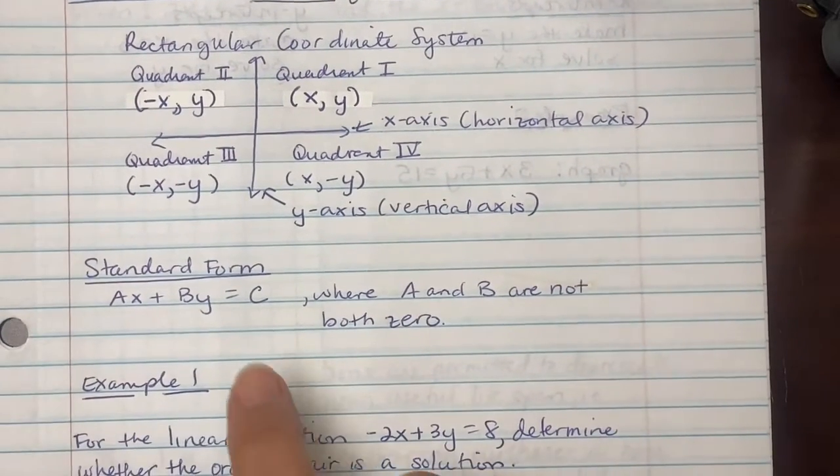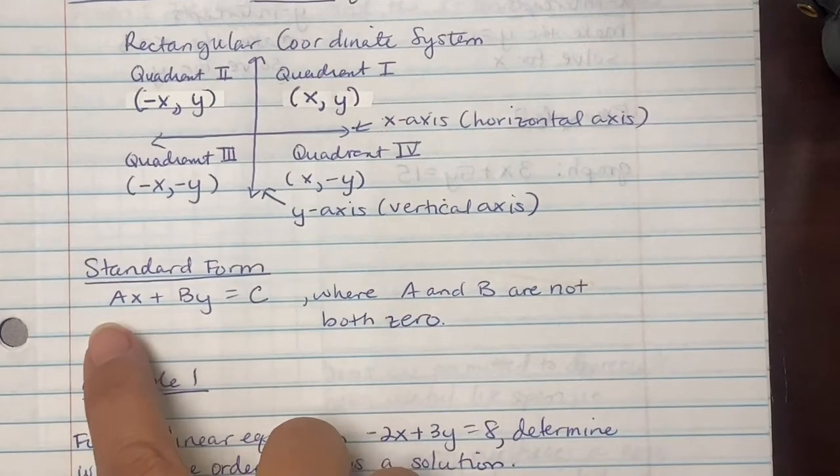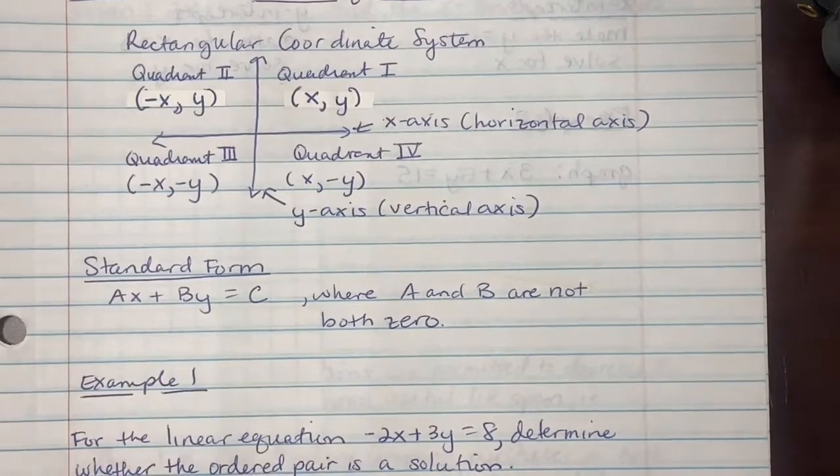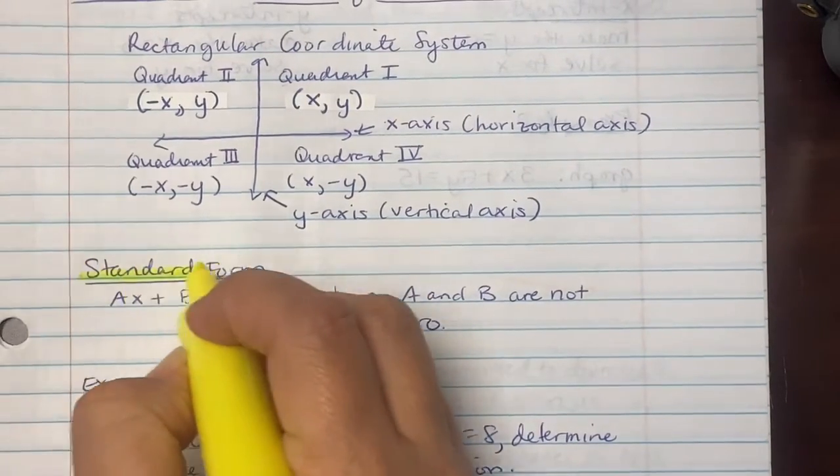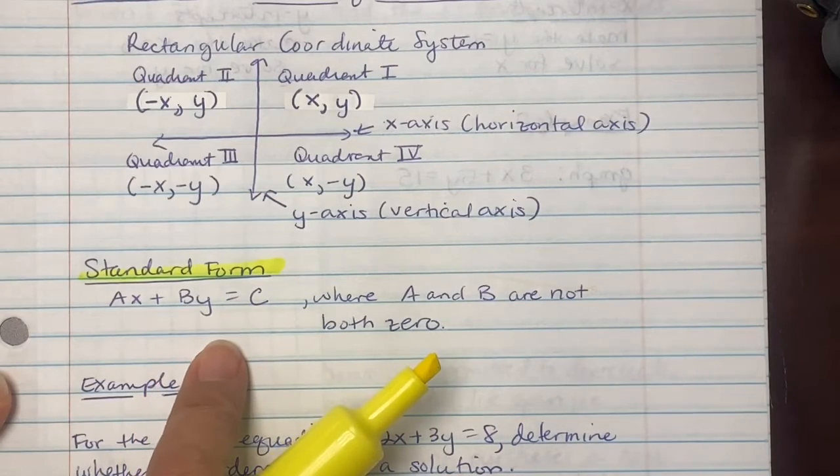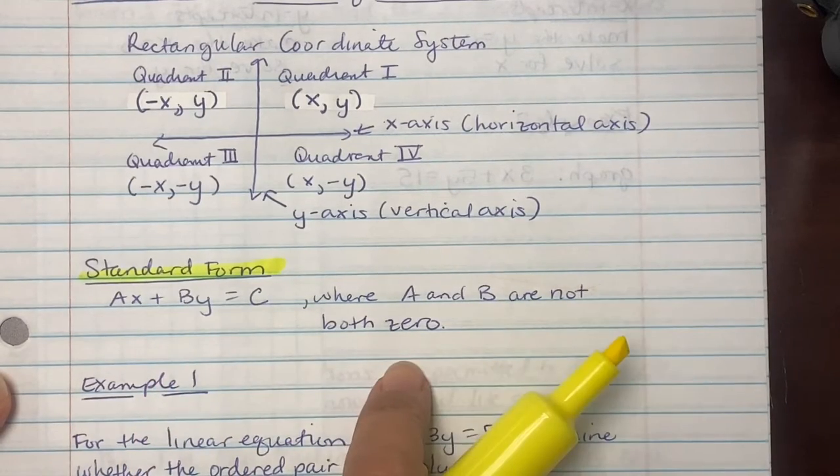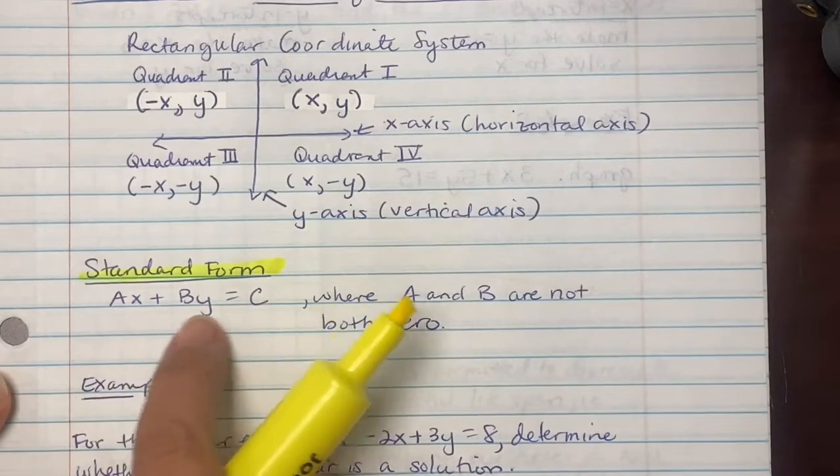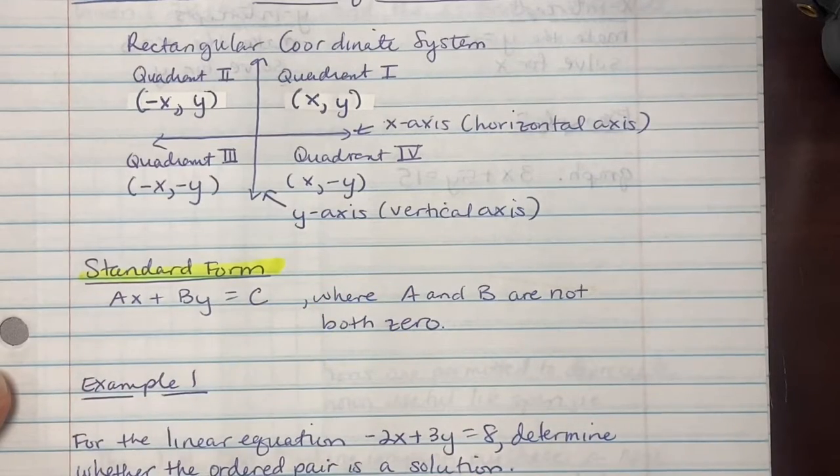Standard form in linear equations is in the form of Ax plus By equal to C. This is your standard form. x and y should be on the same side of equal signs, and A and B are not both zeros, so one has to be present. So we're going to try example one.